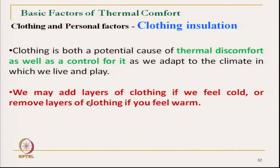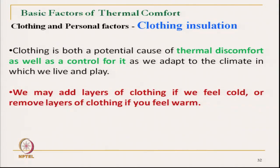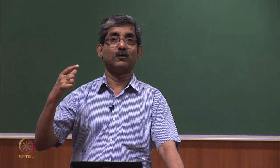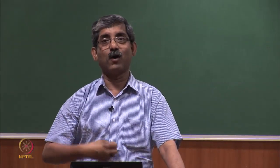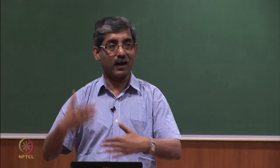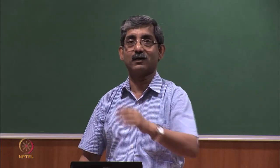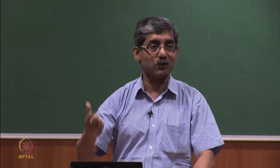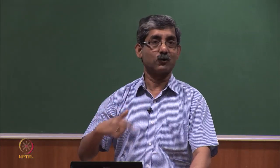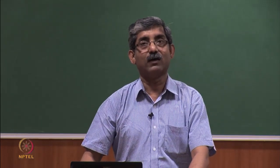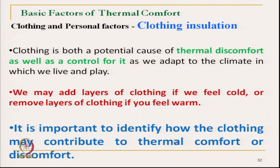We may add layers of clothing depending on the type of environment, and adapt gradually. If we need to restrict body heat from escaping at a higher rate, we may keep adding layers, and if insulation feels too high, we may remove some. By changing the type of clothing we can control the heat balance. It is important to identify how clothing may contribute to thermal comfort or discomfort.